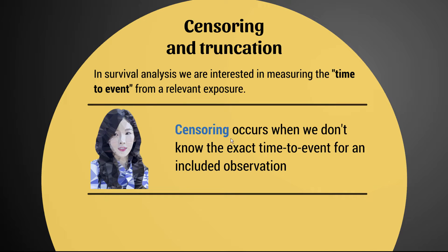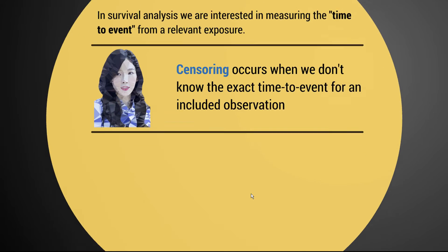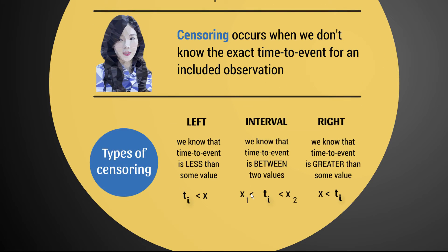Censoring occurs when we don't know the exact time to event for an included observation. Going back to our cancer example, it might be that someone in the sample who developed cancer then died sometime later, but we're not exactly sure how long it took them to die. There are actually three different types of censoring depending on what piece of information we do have about the time to event.